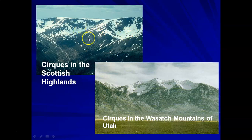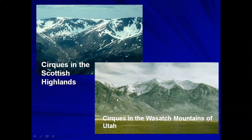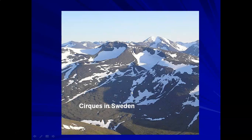There are cirques all over high mountain areas on Earth. Here are some cirques in the Scottish Highlands — you can see these scooped-out areas. You can also see cirques in many high mountains of the western United States, in the Rockies and up into Canada. Here's a mountain range in Utah — three little cirques right here in the Wasatch Mountains. And cirques in Sweden, associated with the Scandinavian ice sheet and individual mountain glaciers that grew there.